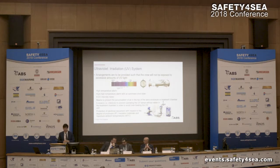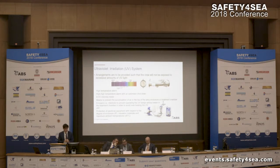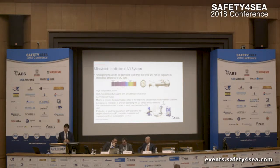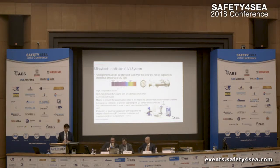For UV systems, normally we have UV treatment during uptake together with a filter, and then during discharge of ballast water we have another stage of UV treatment. The risks are to avoid the crew being exposed to excessive UV light, and also to prevent the UV lamps from running dry. We have measures incorporated in our rules, like high temperature alarms, UV intensity meters, and interlocks that will prevent the UV lamps from running without water.